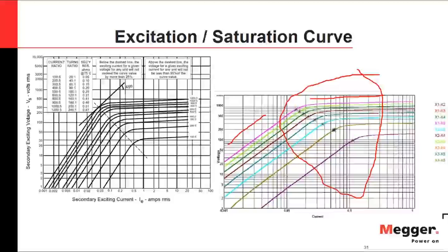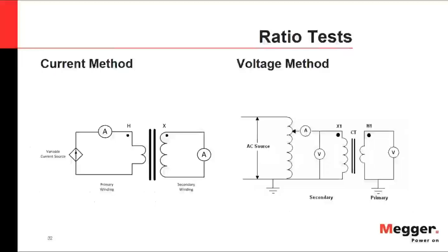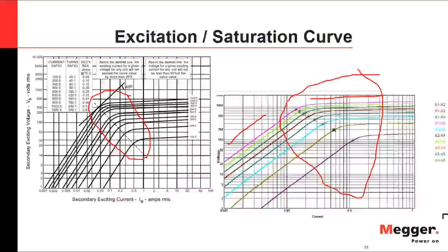Once the saturation point is known for the specific CT being tested, ratio testing can be performed on the linear zone of the response. The ratio test can be performed by two methods: the current method and the voltage method.